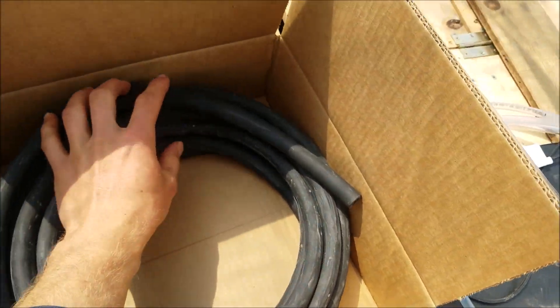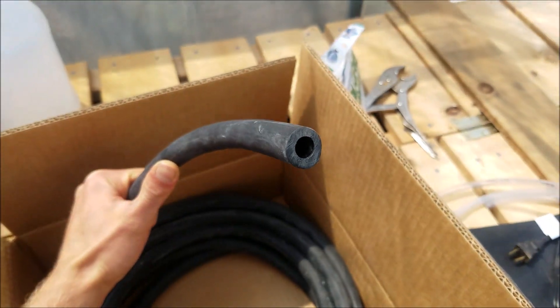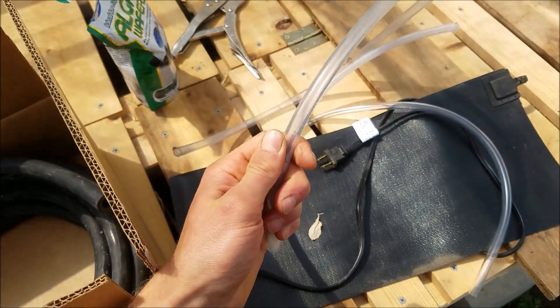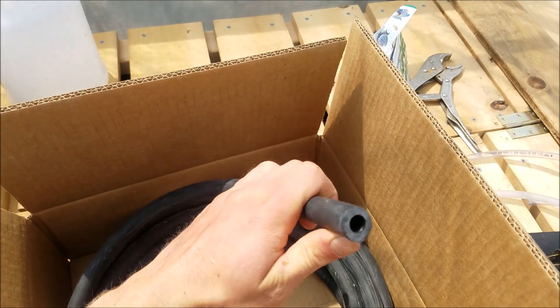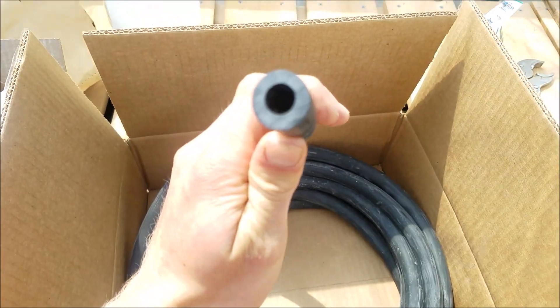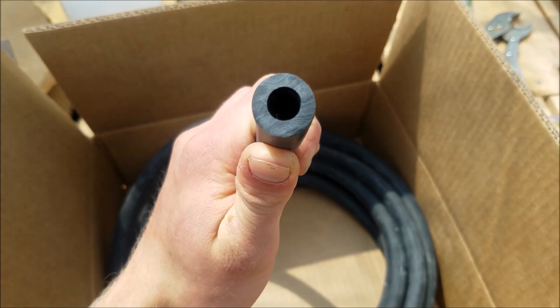I got this weighted air tubing to use for my aquaponic system. So this way it will stay at the bottom, doesn't float, whereas you have this one that floats. So this will have it stay at the bottom of my DWC grow beds or my floating raft grow beds. It's much thicker, you can see, heavy duty.